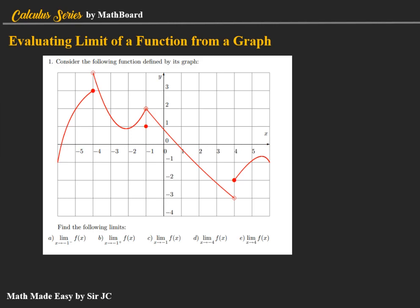Letter A: the limit of f of x as x approaches negative one from the left. Letter B: negative one from the right. Letter C: negative one. Letter D: negative four. And letter E: x approaches positive four. The first step in evaluating the limit of the function from its graph is to consider the left and the right-hand side limits. In order for the limit to exist, the left and right-hand side limits must be equal to each other.